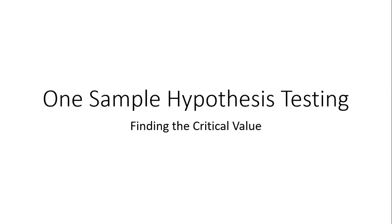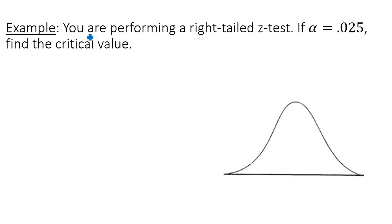This is a video on one sample hypothesis testing, finding the critical value. Now, you are performing a right-tailed z-test, so we're dealing with the standard normal distribution. If alpha equals 0.025, that would be my level of significance here, find the critical value.